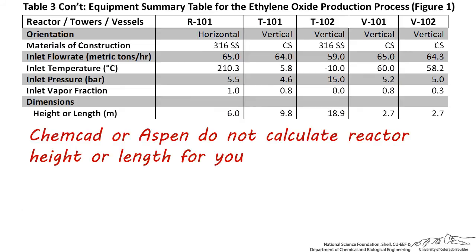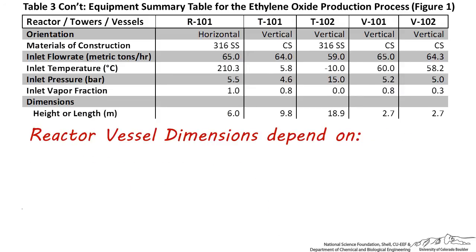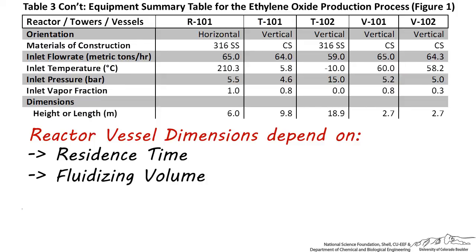Many students believe that since ChemCAD or Aspen gives them a volume, such as 5 meters cubed for their reactor, they can just guess at a length and diameter, and as long as the cross-sectional area times the height equals the volume given in the software, then the numbers are accurate. This is not a good approach. Reactor vessel dimensions depend on factors such as the average time the reactants and products are in the reactor, and if solids are being suspended, the volume required to reach and maintain minimum fluidizing velocity to allow for mixing.